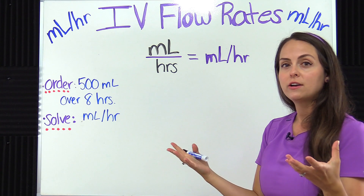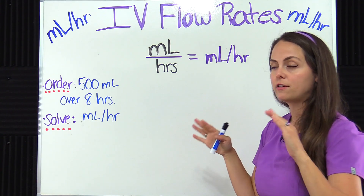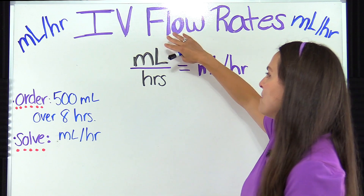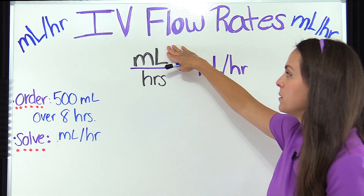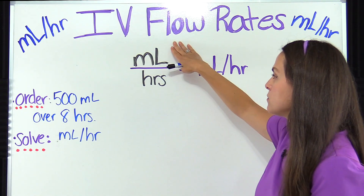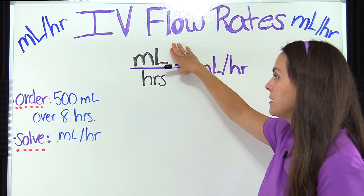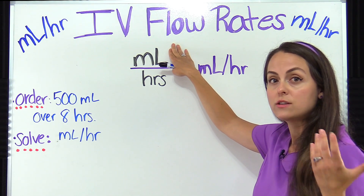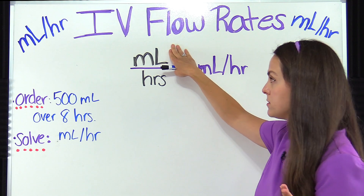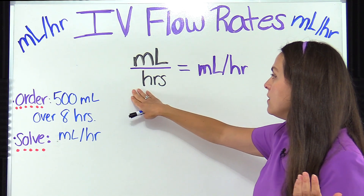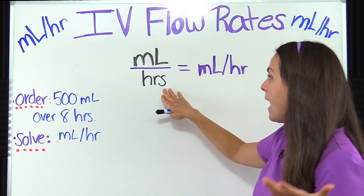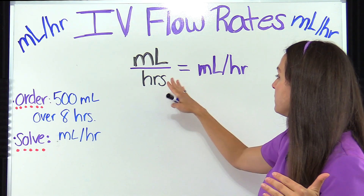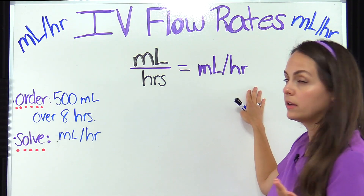How many milliliters should the patient be receiving every hour? The top part of the formula is the milliliters part — this is where you plug in the total volume amount ordered for your patient. That's divided by the total hours it needs to be infused over. You divide that, and then you get milliliters per hour.